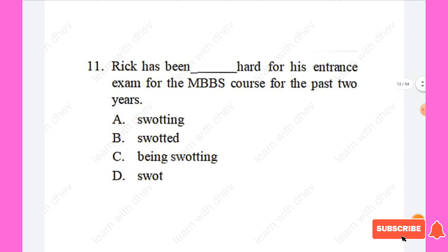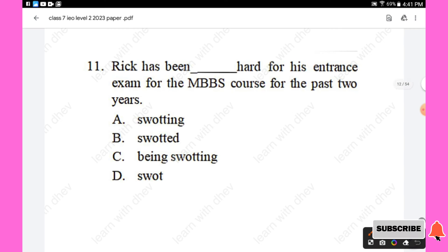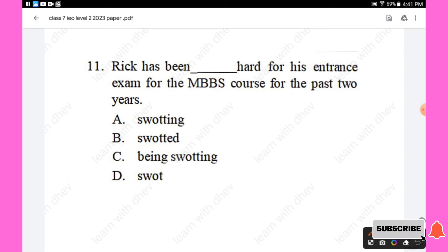Question 11: Rick has been — hard for his entrance exam for the MBBS course for the past two years. Options are: swatting, swatted, being swatting, swat. The right answer is 'swatting' — Rick has been swatting hard for his entrance exam. Option A is the right answer.